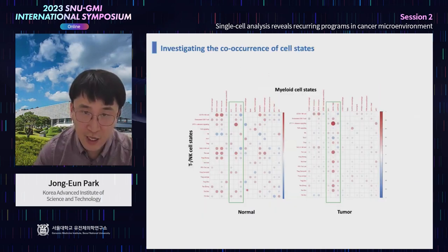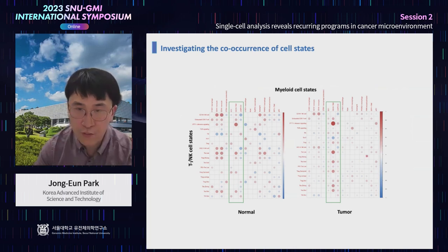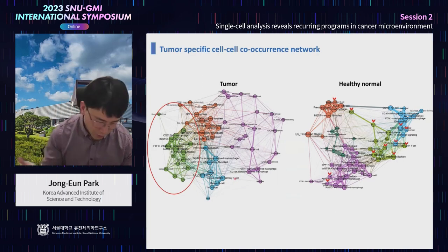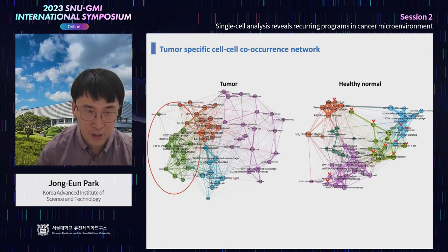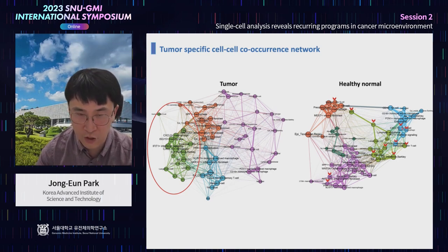With these programs we can ask which states co-occur across tissue types — for example, T-cell states and myeloid states. Interestingly, interactions between interferon and other immune signatures are specifically found in tumor tissue but not in normal tissue. This can be abstracted into a neighborhood graph, where the interferon-responsive program found only in tumor tissue forms a network, while being dispersed in the normal tissue ecosystem.